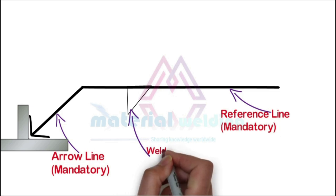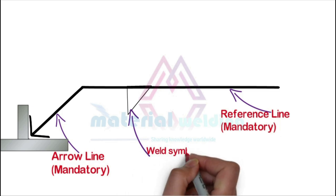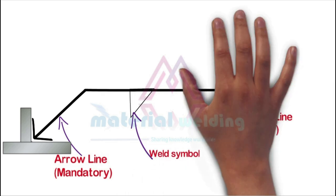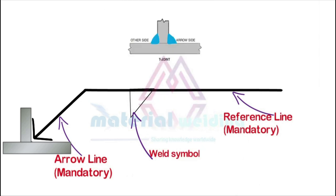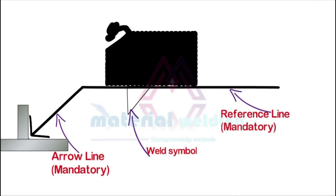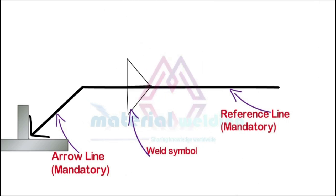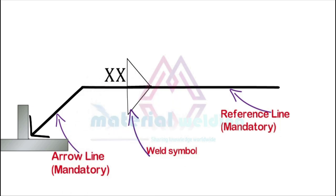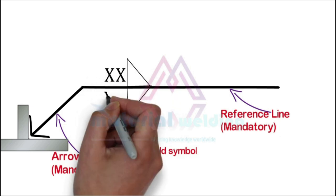The weld symbol is placed on the reference line. A weld symbol placed below the reference line means the weld is on the arrow side. Similarly, the weld symbol placed above the reference line means the weld will be made on the opposite side of the arrow. Next is weld size, which is given on the left side of the welding symbol.